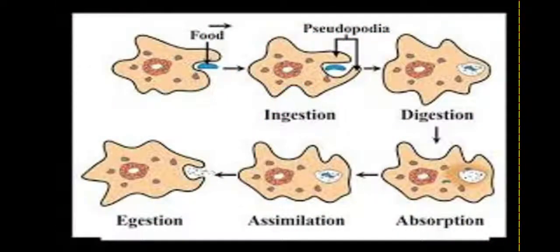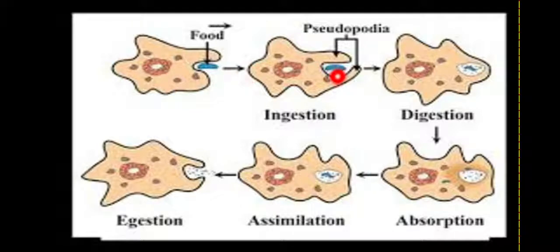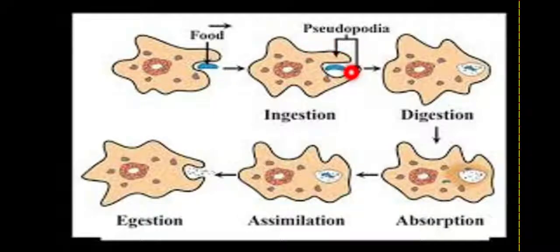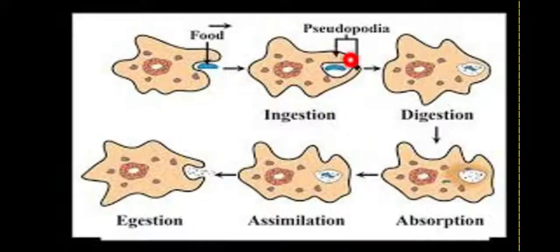When amoeba senses a food particle — shown as the blue substance in the diagram, with the yellow figure representing amoeba — it changes its shape and traps the food using structures called pseudopodia. Pseudopodia perform two functions: they help amoeba capture food and also help it move from one place to another.